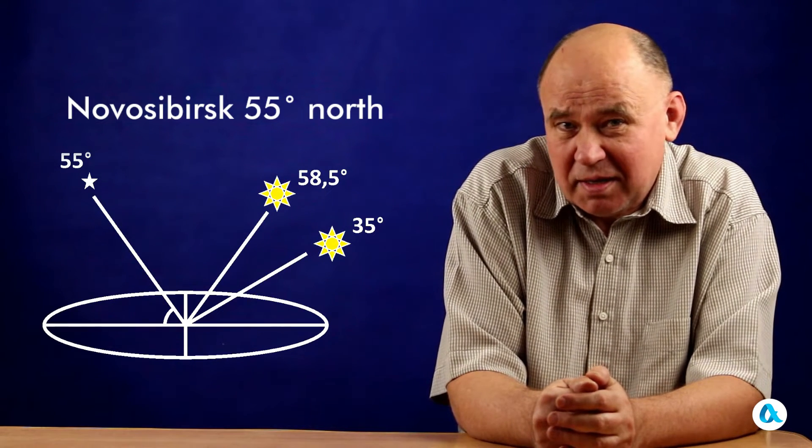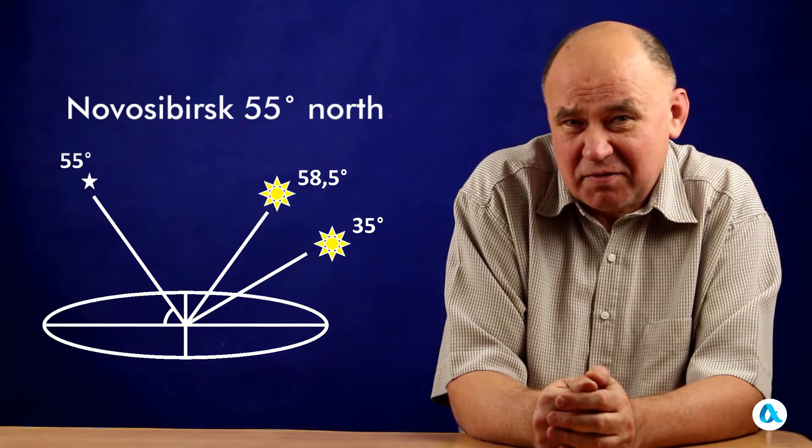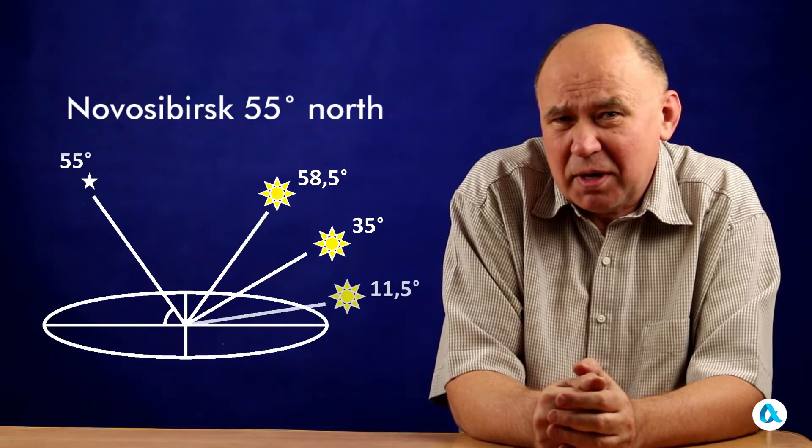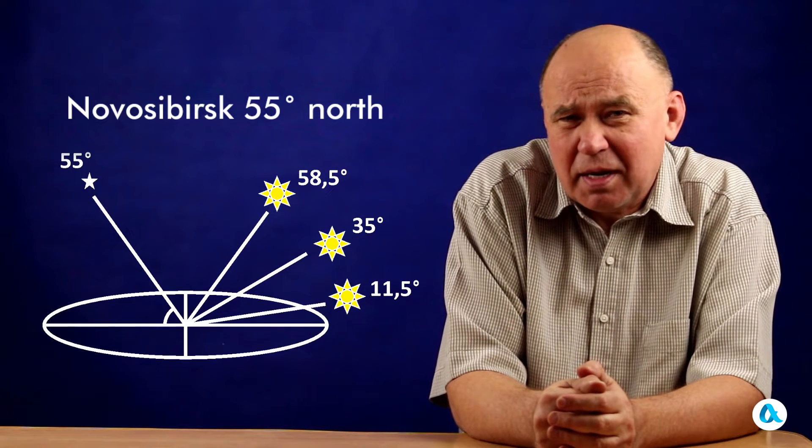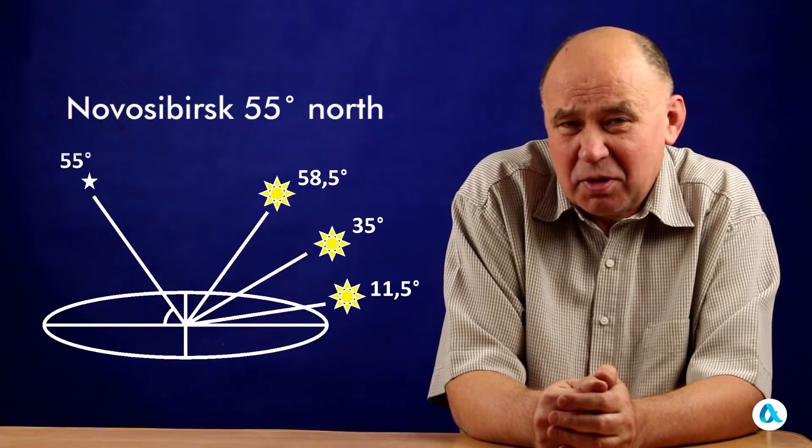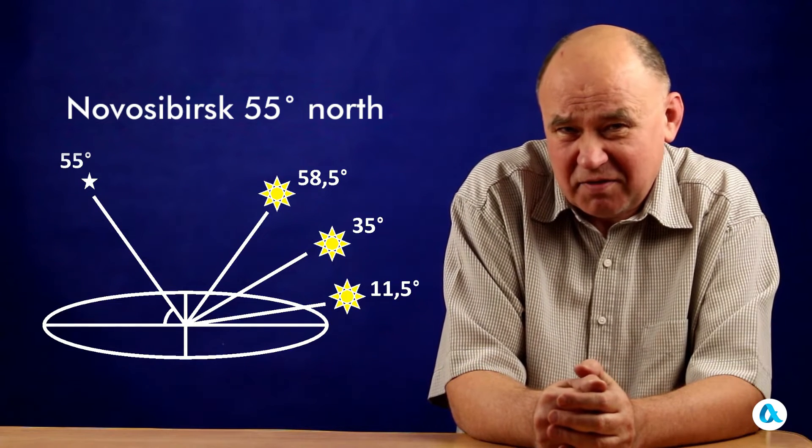In winter, on the contrary, subtract 23.5 from 35, and you will get 11.5 degrees.